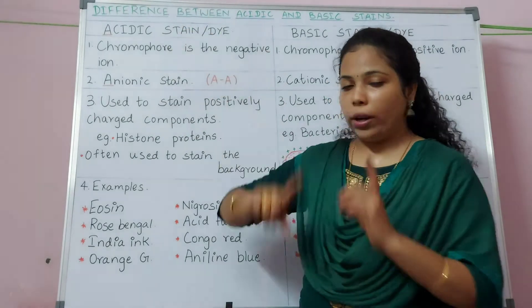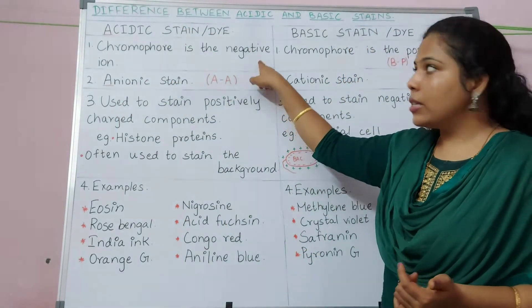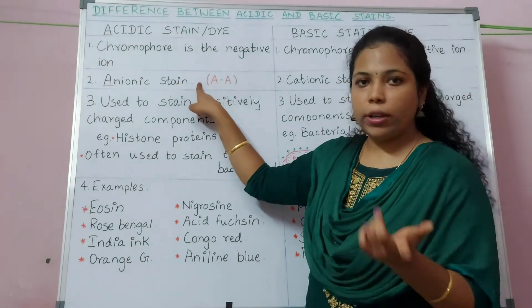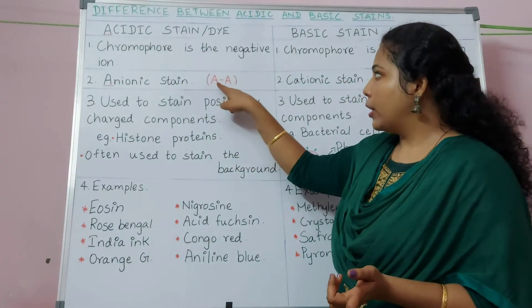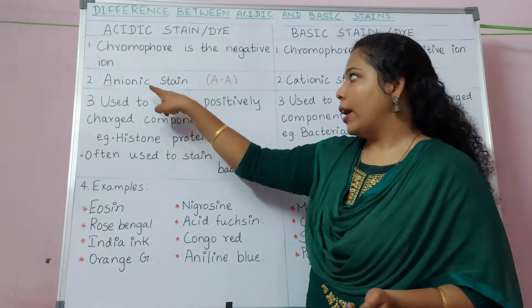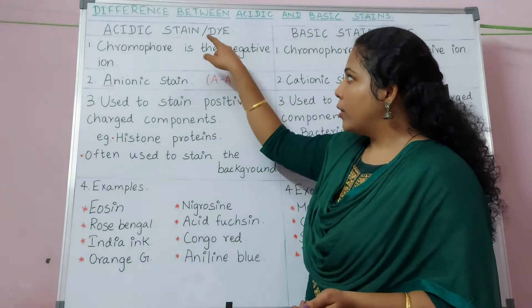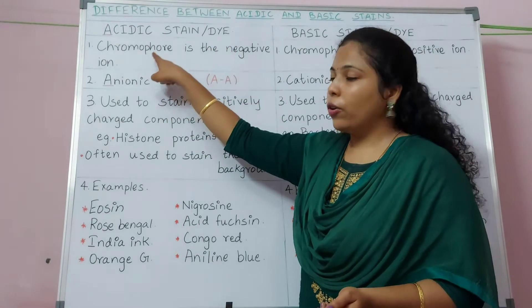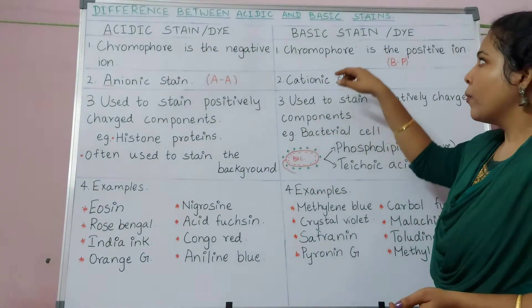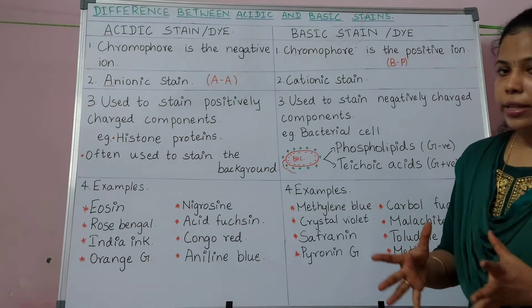The first point is that acidic stain is the one in which the chromophore is the negative ion. Since the chromophore is the negative ion, it is called anionic stain. A for acidic stain, A for anionic stain — anion means negative. So this acidic stain has a negative ion as its chromophore.